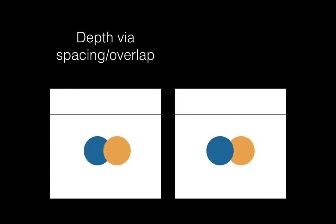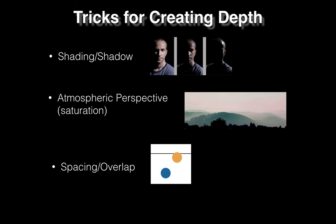Similarly, overlap: it comes naturally to know that the ball on the right is in front of the ball on the left in one image, and the blue ball is in front of the yellow ball in the other. This gives us our next trick for creating depth: spacing and overlap. Remember, these are important tricks because when you're creating a flat image, there is no real depth. So in order to have something that is visually striking, you need these tricks to create the illusion of depth, or else you're just going to get a really plain, boring, flat-looking image.